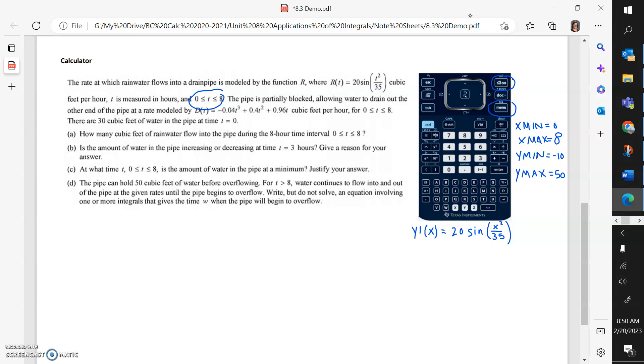And then the pipe is partially blocked, allowing water to drain out the other end of the pipe at a rate modeled by, and we're going to save that function right away too. That function is going to be negative 0.04 X cubed plus 0.4 X squared plus 0.96 X. These functions are automatically saved on the INSPIRE, not as Y1 and Y2, but as F1 and F2.